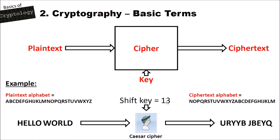The ciphertext alphabet is shifted by 13, so it doesn't start at A — it starts at N. And it doesn't end with Z, it ends with M. So A is encrypted to N, B is encrypted to O, and so on. Z is encrypted to M. And the result of the Caesar cipher is the ciphertext, which is U-R-Y-Y-B-J-B-E-Y-Q.